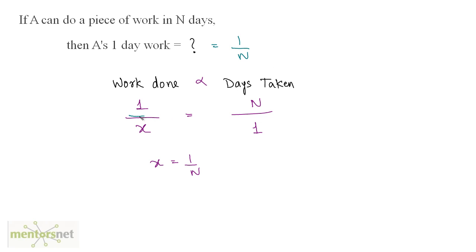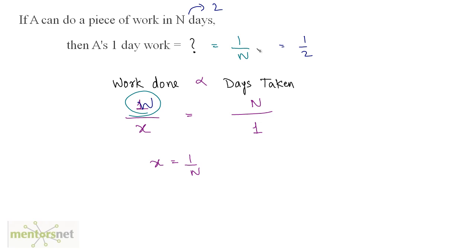Why did we take the complete work done as 1? Consider that A can do the complete work in two days — A's one day work will obviously be half the work. A's one day work gives us the fraction of the total work done. Had we considered this as something like w, A's one day work would have come out as w/n, giving us an incomplete answer. That's why we take it as 1. This is an important formula — you should remember this.